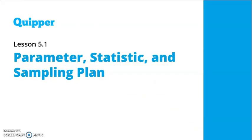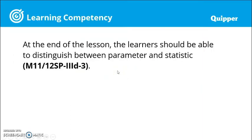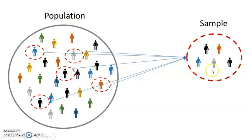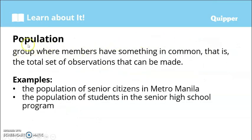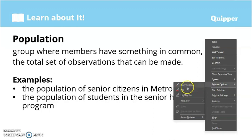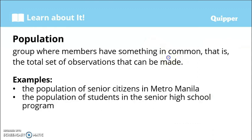In this video we are going to talk about parameter in statistics. Specifically, in this lesson you should be able to distinguish between a parameter and a statistic. As you can see in this figure, we have a bigger group of people and a smaller group of people. The bigger group is what we call the population and the smaller is the sample. A population is a group where members have something in common — it is the total set of observations that can be made.